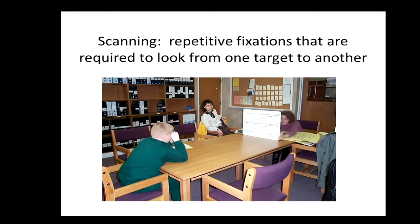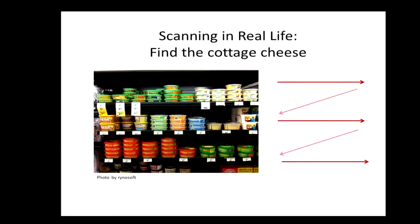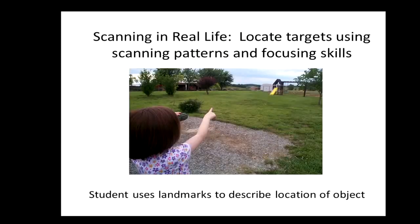Our next skill is scanning — making repetitive fixations required to look from one target to another. Here we see a boy on a beginner's scanning lesson, moving his head as he looks through the telescope to follow a pattern moving from left to right and top to bottom. You can teach scanning by placing stickers on mortar between bricks, asking the student to scan in this same pattern as he names the pictures on the stickers. Scanning is a crucial skill for reading the whiteboard in the classroom. In the community, we might scan to find a product on the grocery store shelf or to find a slide or a friend on the playground.